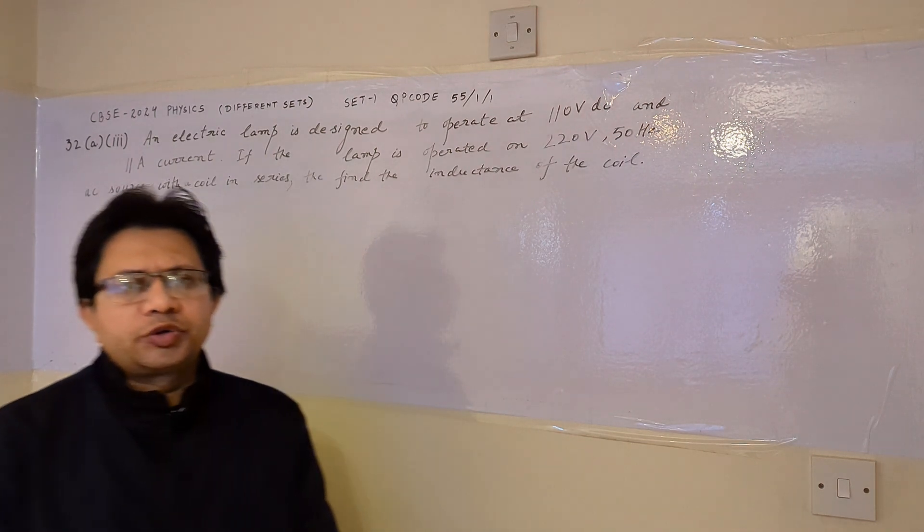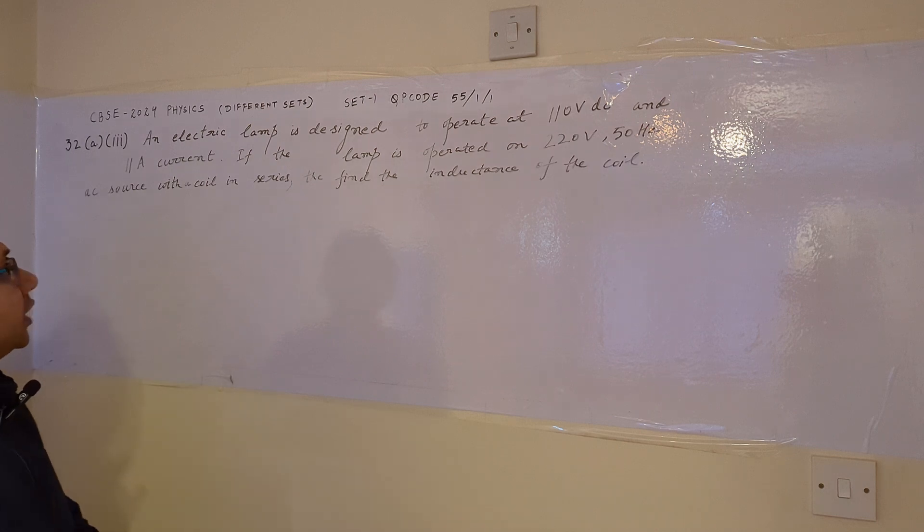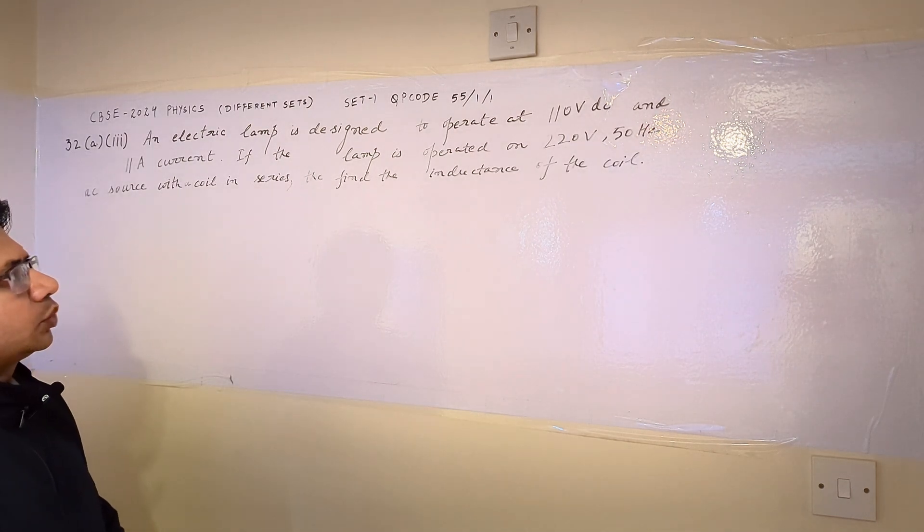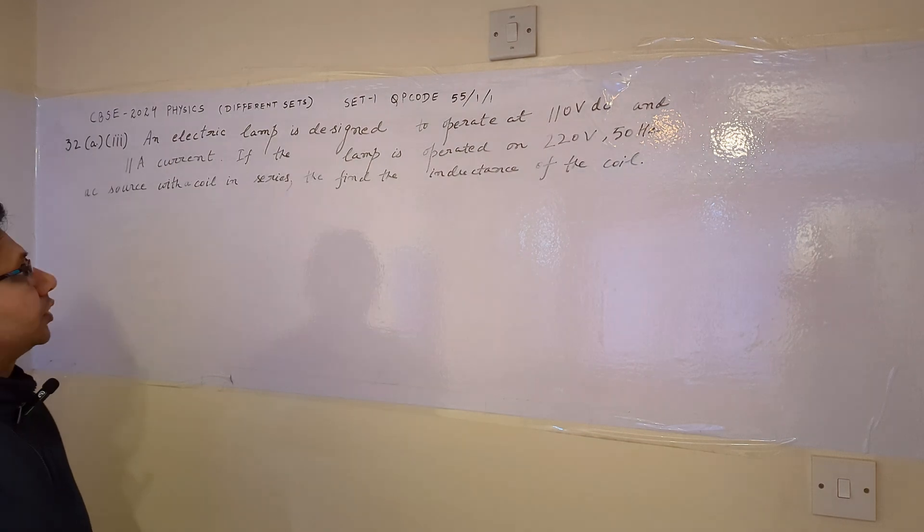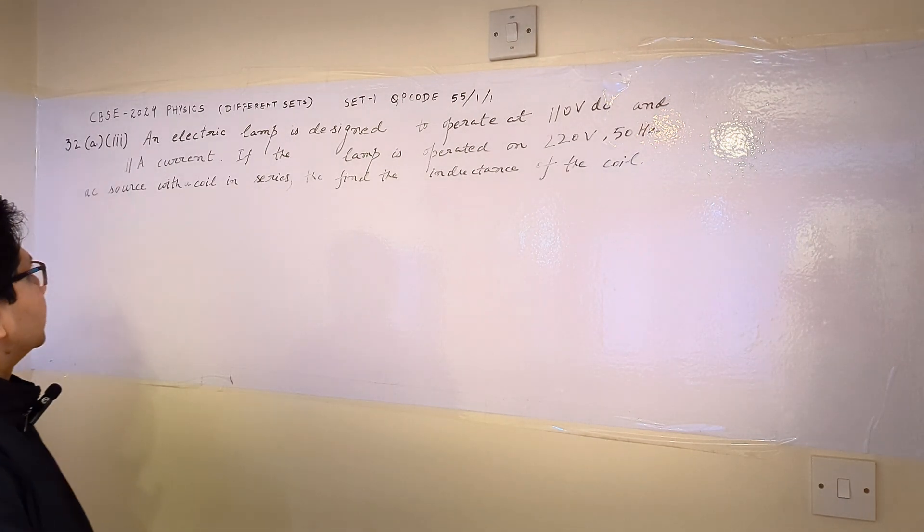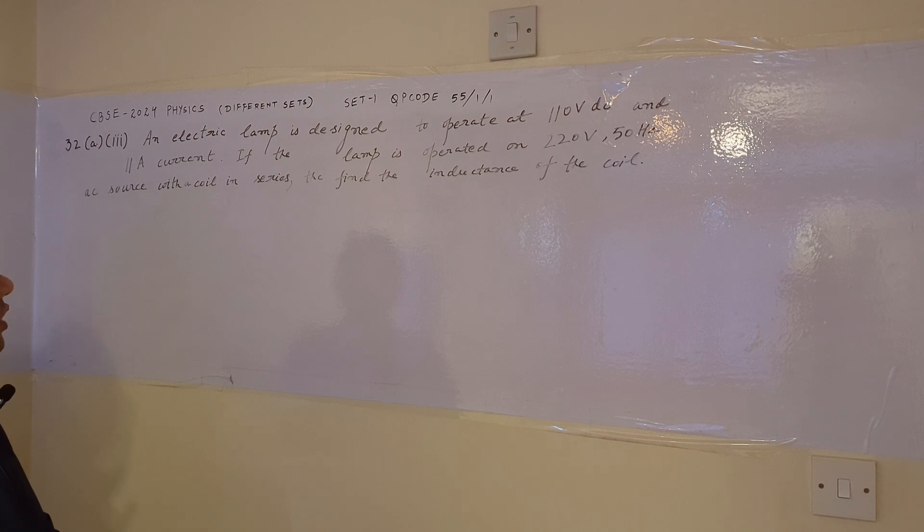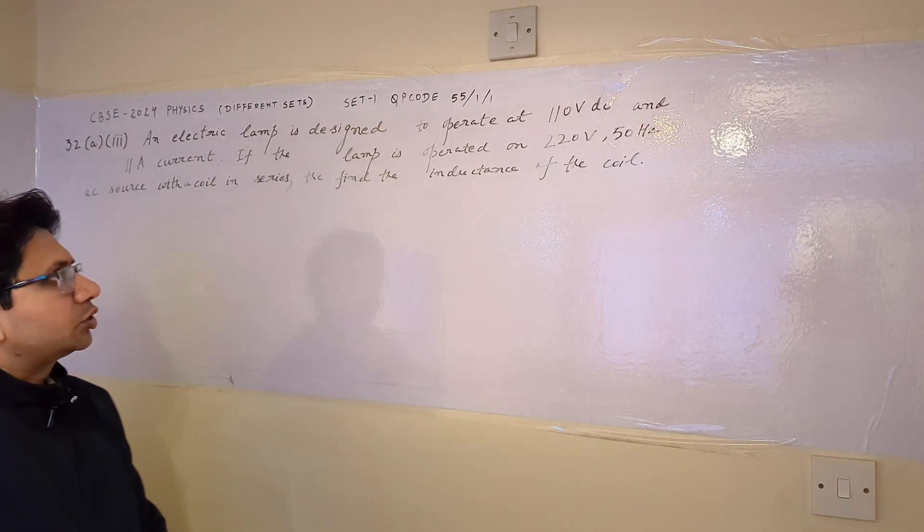Hello students. How are you? Hope you are doing well. Now the question is: an electric lamp is designed to operate at 110 volt DC and 11 ampere current. If the lamp is operated on 220 volt 50 hertz AC source with a coil in series, then find the inductance of the coil.